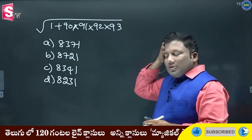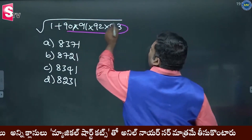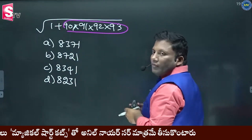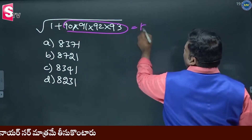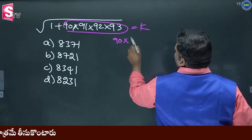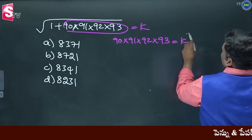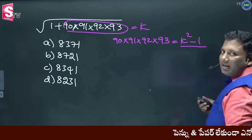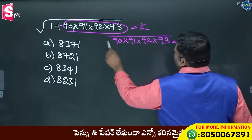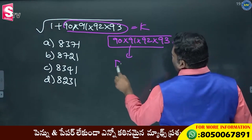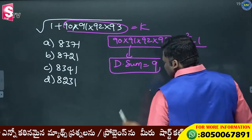Here we go. Listen carefully. This is 9 divided plus 1, and then equivalent to k is 90 into 91 into 92 into 93, equal to k squared minus 1. It is digital sum 9. 90 is 9 into any number — it is digital sum 9.